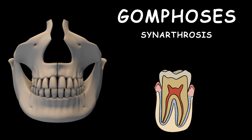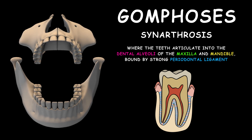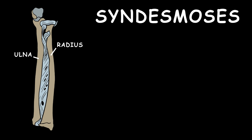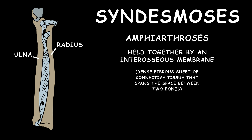Gomphoses are also immovable. The one example of this type of joint is where the teeth articulate into the dental alveoli of the maxilla and mandible, bound by strong periodontal ligament. Syndesmoses are amphiarthroses, so they are slightly movable joints, held together by an interosseous membrane. One example is the middle radio-ulnar joint.